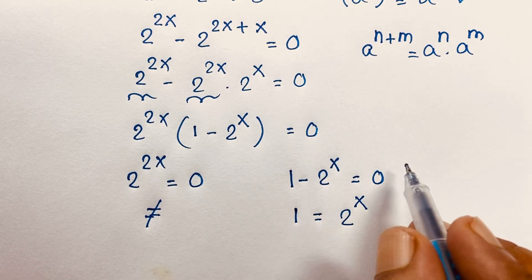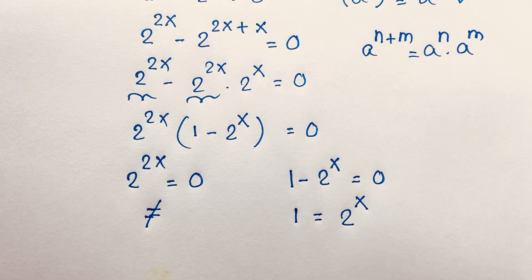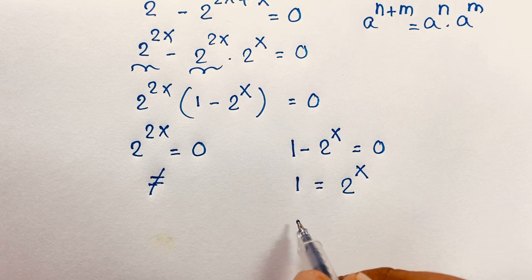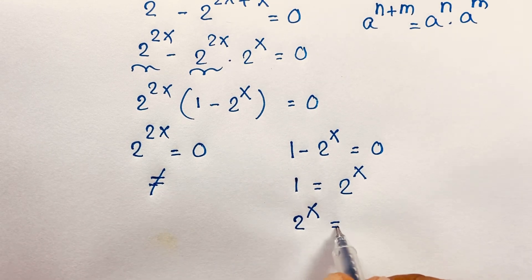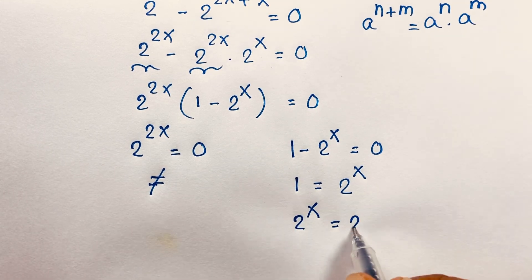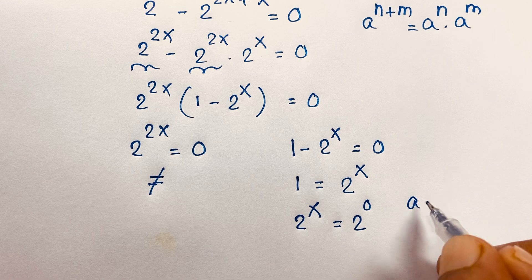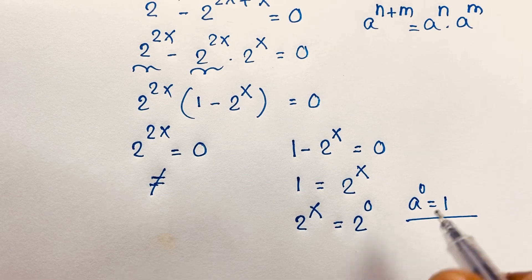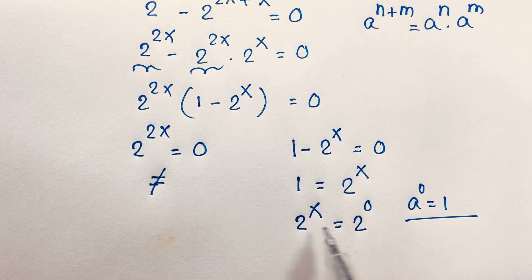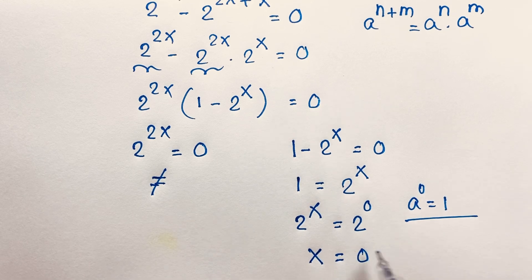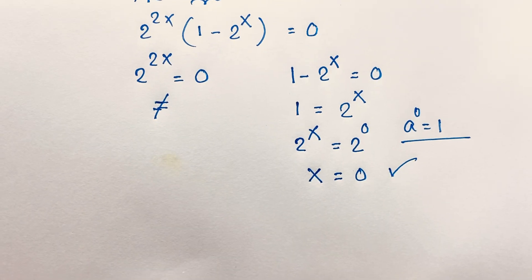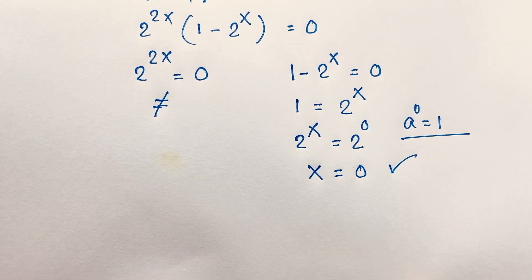Moving the negative to the other side, it becomes positive. Then 2 to the power x equals 1, and 1 is 2 to the power 0 — you know that a to the power 0 equals 1, so 2 to the power 0 equals 1. Since the base is the same and the exponents are equal, x is equal to 0. This is our final answer for this exponential math problem.